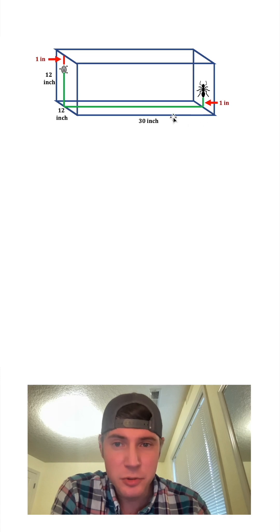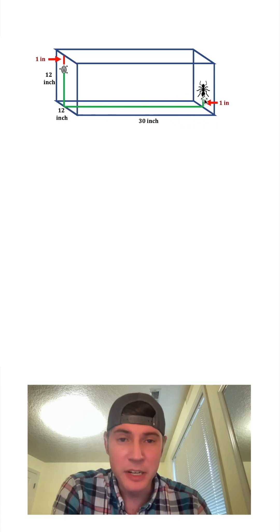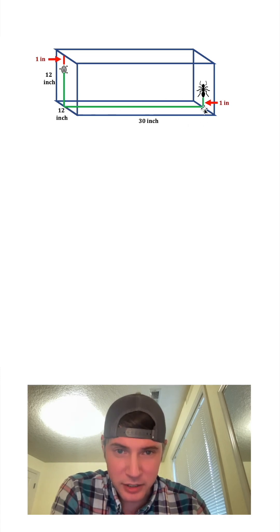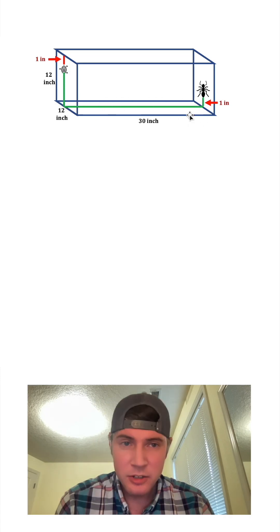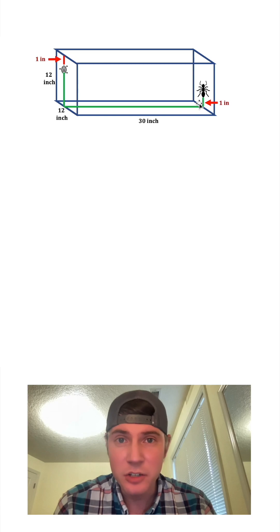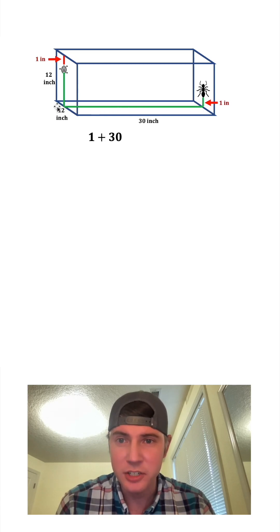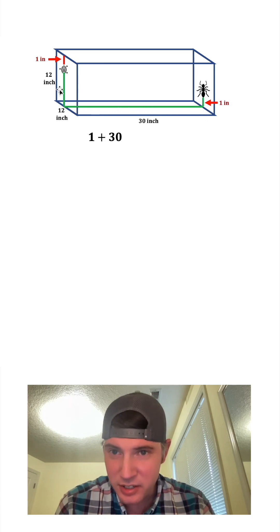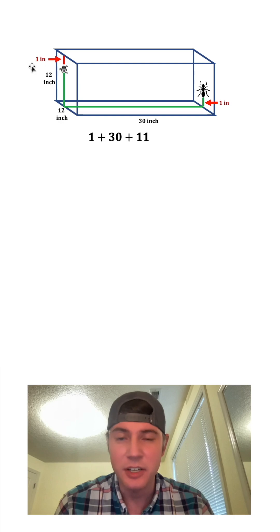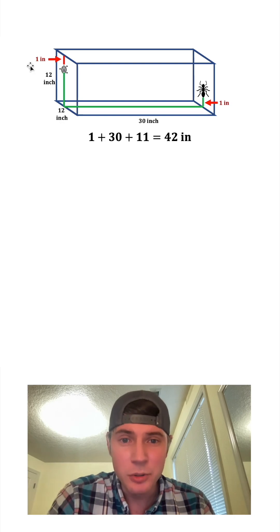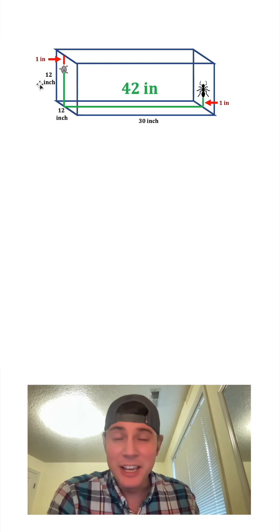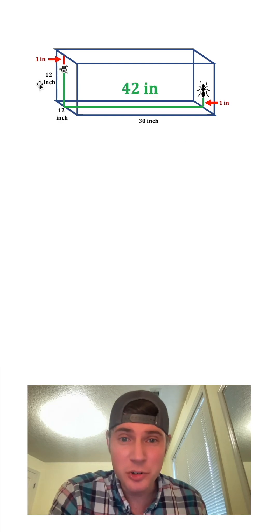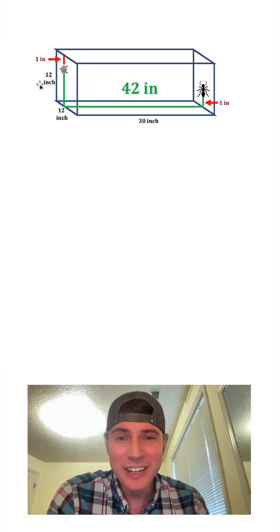An initial attempt would be this route right here. It makes most sense to directly go here, here, and then up here. So to find the length of this green path, we're going to add the one inch here to the 30 inches here, plus the 11 inches here, and that's equal to 42 inches. So is this the shortest route? Can you think of a shorter route?